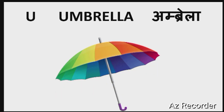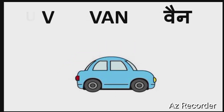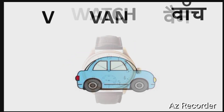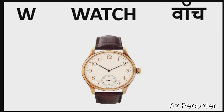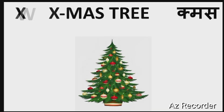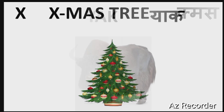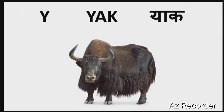U for Umbrella, V for Van, W for Watch, X for Xylophone.